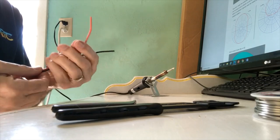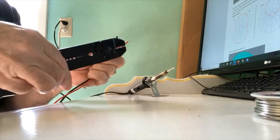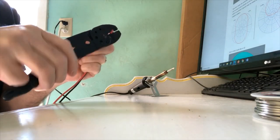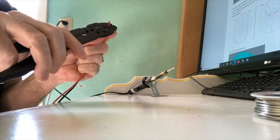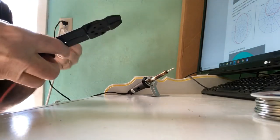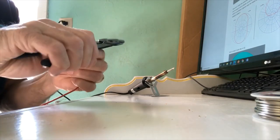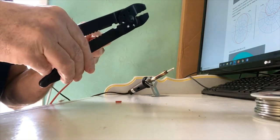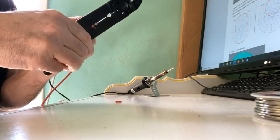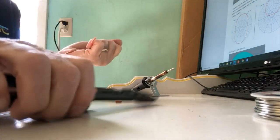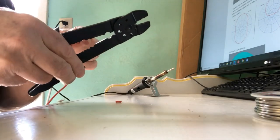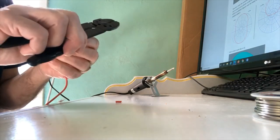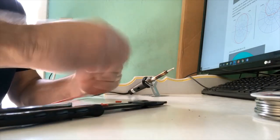We have our soldering iron warming up. And what we're going to do is strip the ends of the wire here. And we'll use the 12 gauge right here. Okay, there's one.